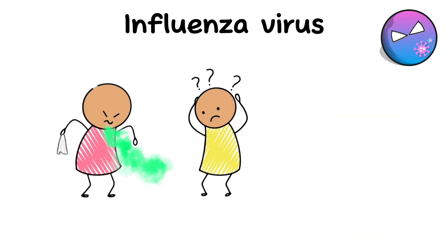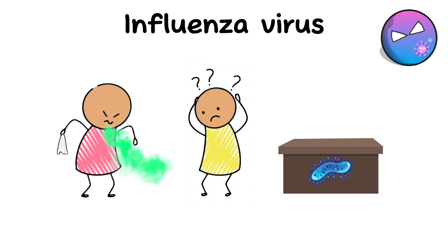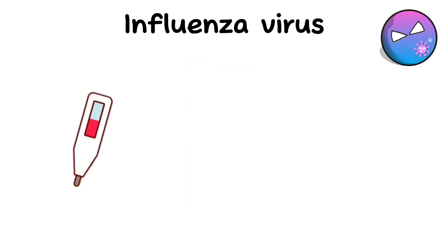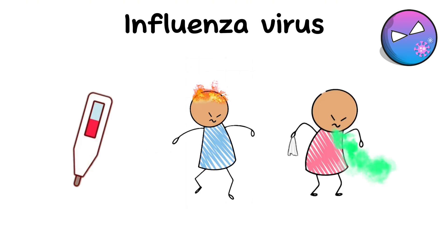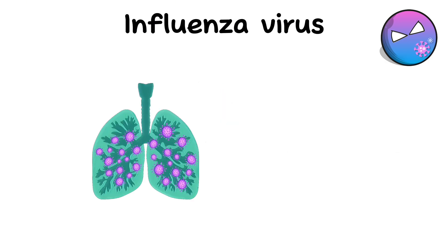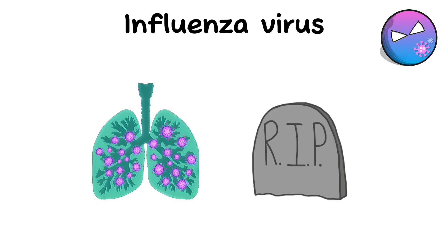Influenza is transmitted through droplets released when an infected person coughs or sneezes, as well as through contact with contaminated surfaces. Flu symptoms include fever, headache, weakness, muscle pain, cough, sore throat, and fatigue. Some people may experience serious complications, such as pneumonia, which can lead to death.